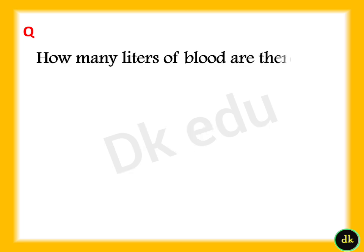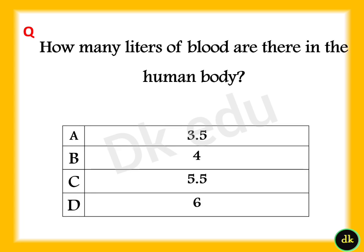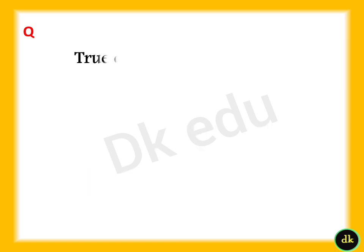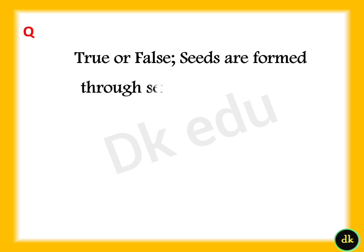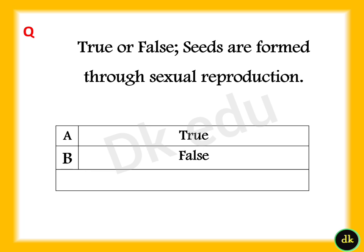How many liters of blood are there in the human body? Answer: Option C, 5.5 liters. True or false — Seeds are formed through sexual reproduction. Answer: Option A, True.